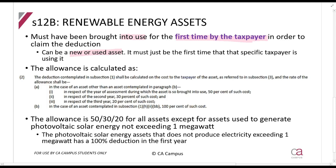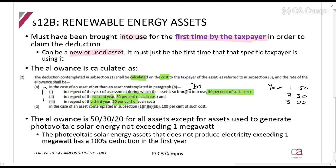The deduction under Section 12B subsection 1 is calculated on the cost to the taxpayer. The rate is: in the year the asset is brought into use, 50% of the cost; in the second year, 30% of the cost; and in the third year, 20% of the cost. So over years one, two, and three, you claim 50/30/20% on a straight-line basis, with no apportionment. This applies to all assets not mentioned under subsection 1(h)(2)(b)(b).